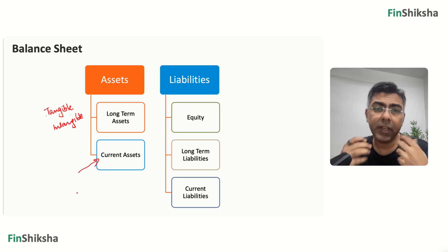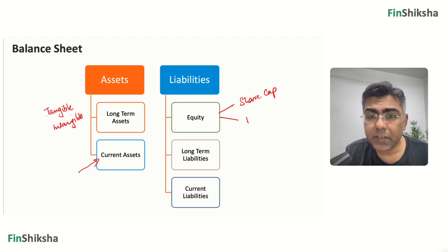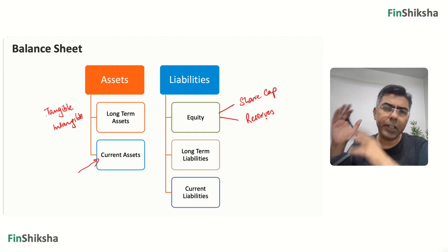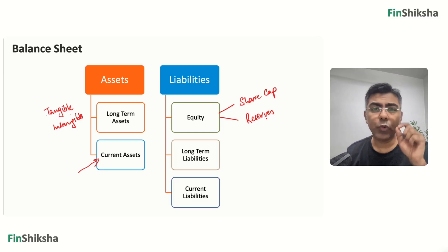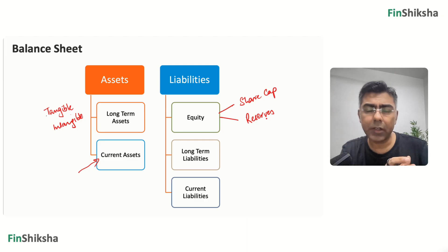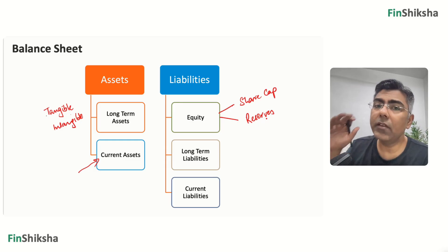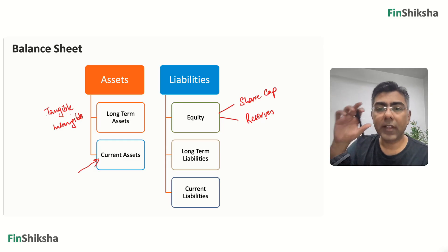On the liability side, you have first the equity — the shareholders' money that has been put in. Equity is broken into two components: share capital and reserves. Share capital is the initial amount of money pumped into the company at face value — number of shares multiplied by the face value. Then as the company makes more profit which it doesn't distribute as dividends, this money keeps getting reinvested and reserves keep building up, representing reinvestment over multiple years. This is shareholder money, supposed to be returned to shareholders.